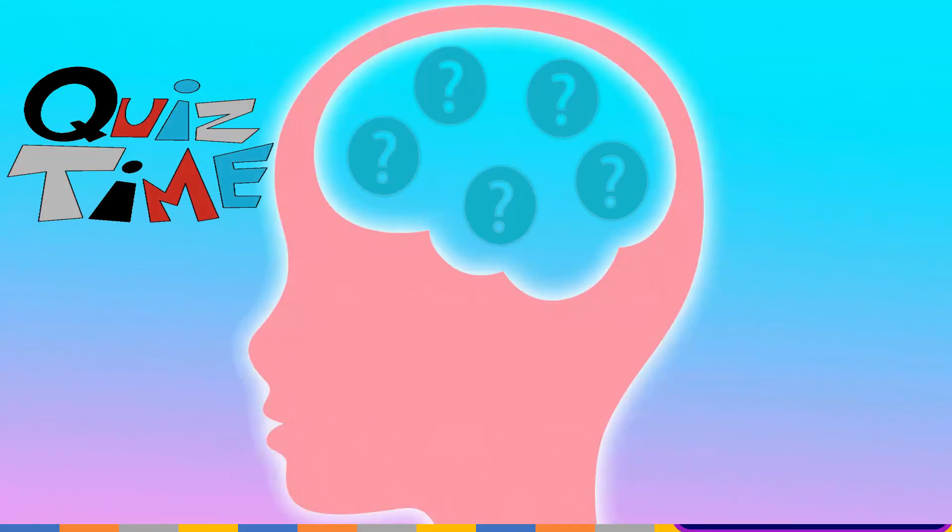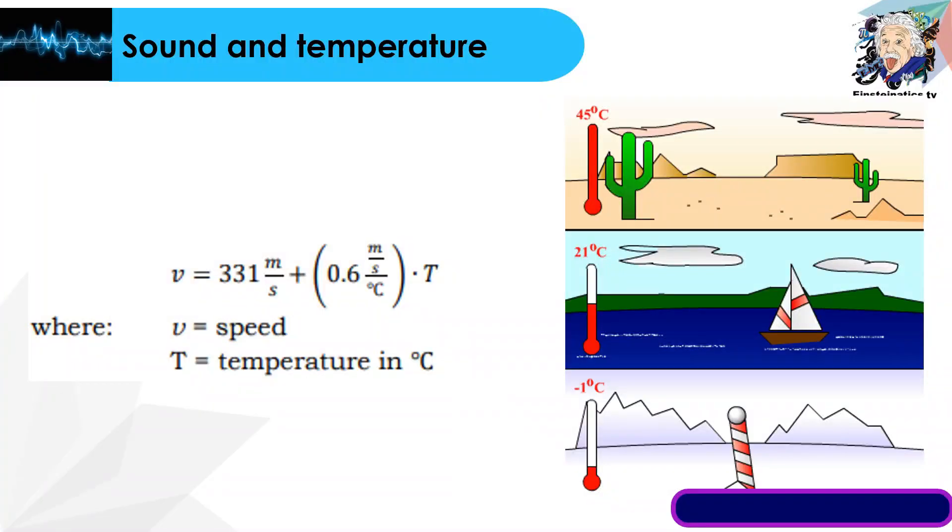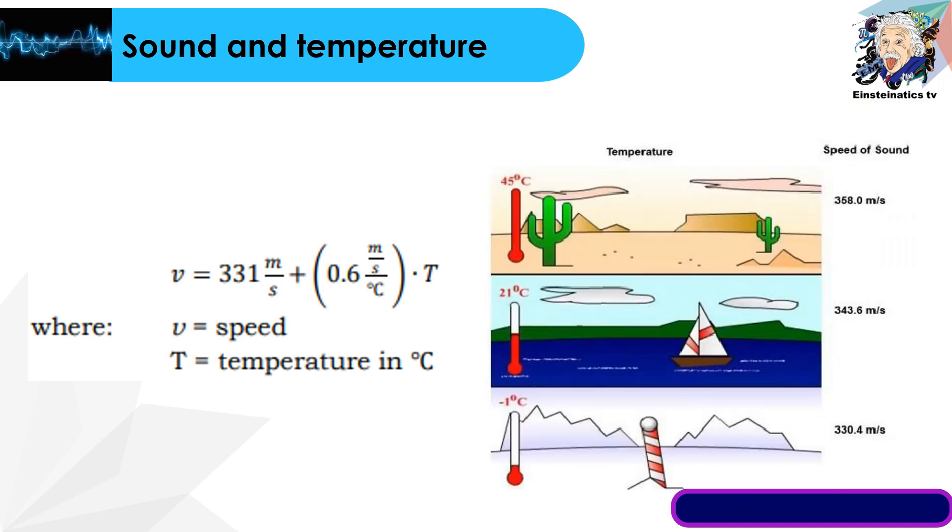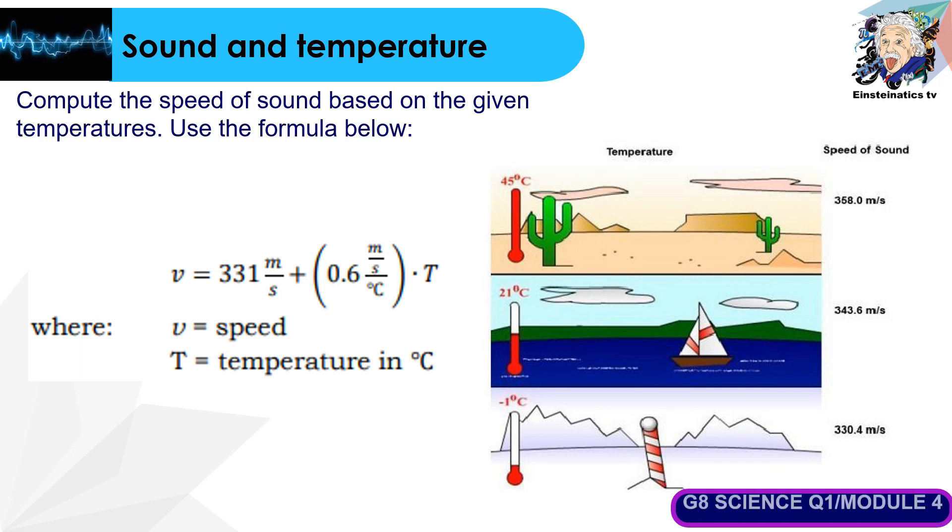This time, let us check how much you have learned from the video by taking on this challenge. You are going to compute for the speed of sound based on the given temperatures. You may use the formula below. Compute what is the speed of sound at 45 degrees Celsius, 21 degrees Celsius, and negative 1 degree Celsius. You may pause the video while answering and press play to check your answer. Here is the correct answer. Did you get it all correct? If so, congratulations!